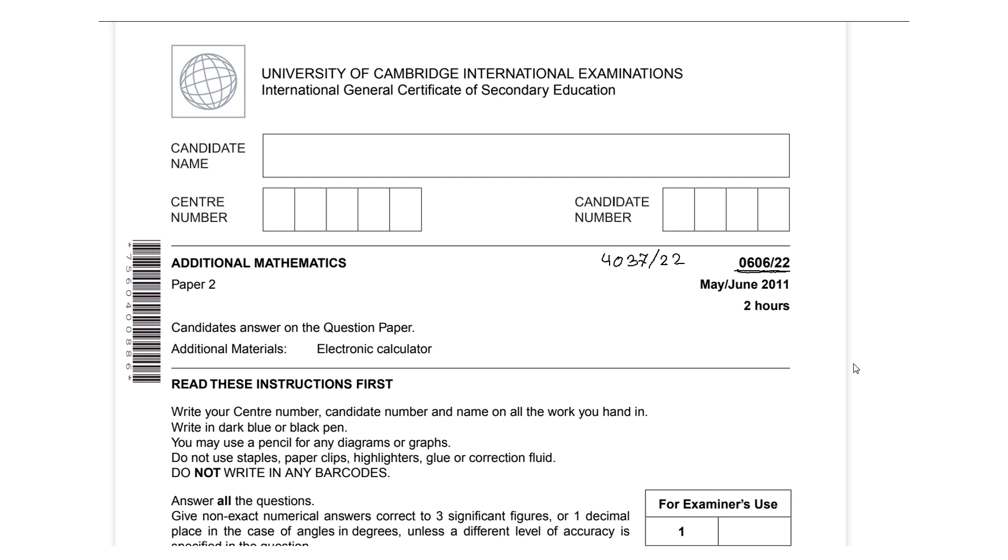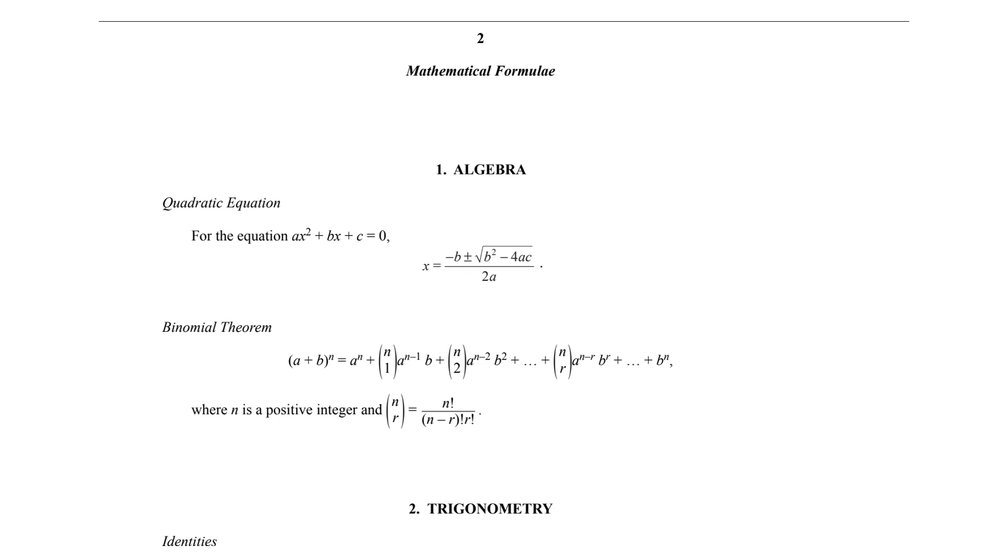Now let's go to the formula page. The first section contains algebraic formulas. The first formula, x equals minus b plus or minus square root of b squared minus 4ac divided by 2a, is the solution of the quadratic equation. The second one, (a + b)^n, is the binomial expansion theorem, and here this factorial n divided by (n - r) factorial times r factorial is known as nCr.